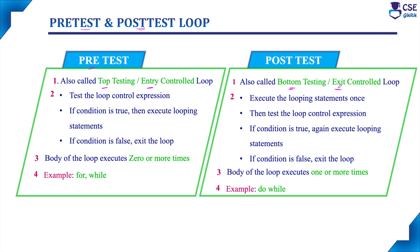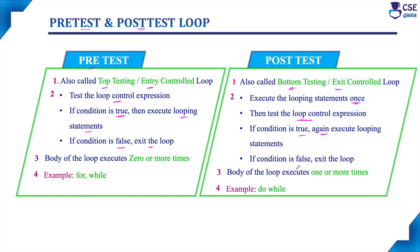Another difference: in a pre-test loop, the loop control expression is tested first. If it evaluates to true, the body of the loop executes; if it evaluates to false, the loop exits. In a post-test loop, the body of the loop executes once by default, and then the loop control expression is tested. If the condition evaluates to false, the loop terminates.